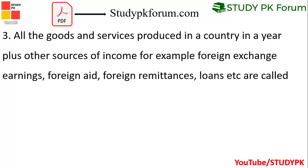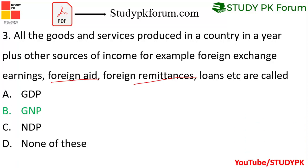Question 3: All the goods and services produced in a country in a year, plus other sources of income such as foreign exchange earnings, foreign aid, foreign interest, and loans — are called GDP, GNP, NDP, or none of these? Option B is the right answer — GNP, Gross National Product.